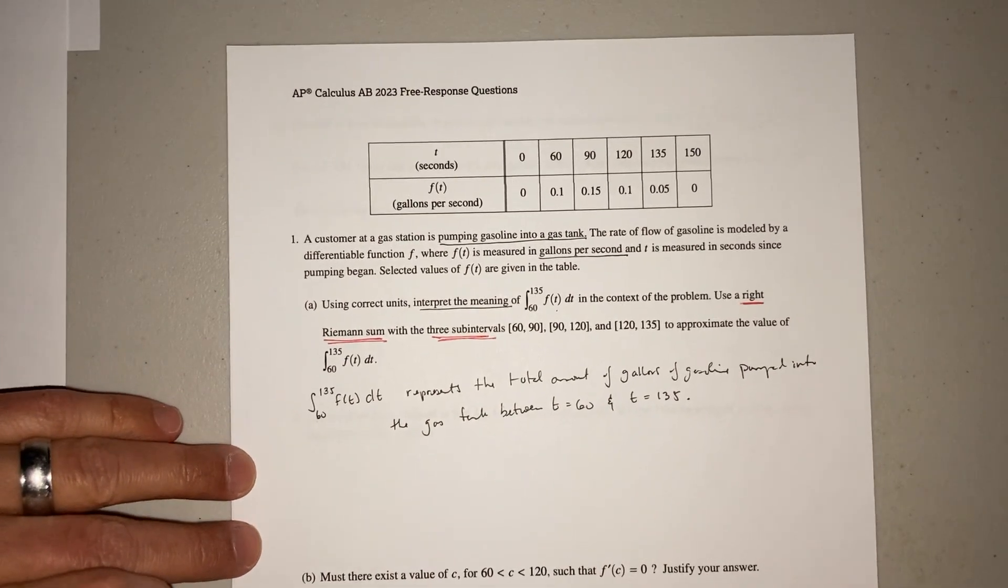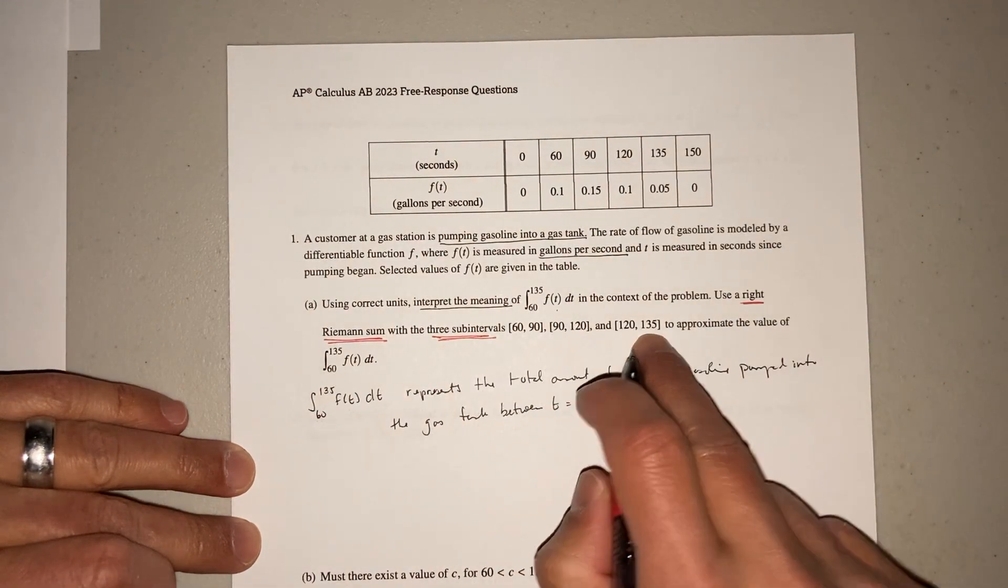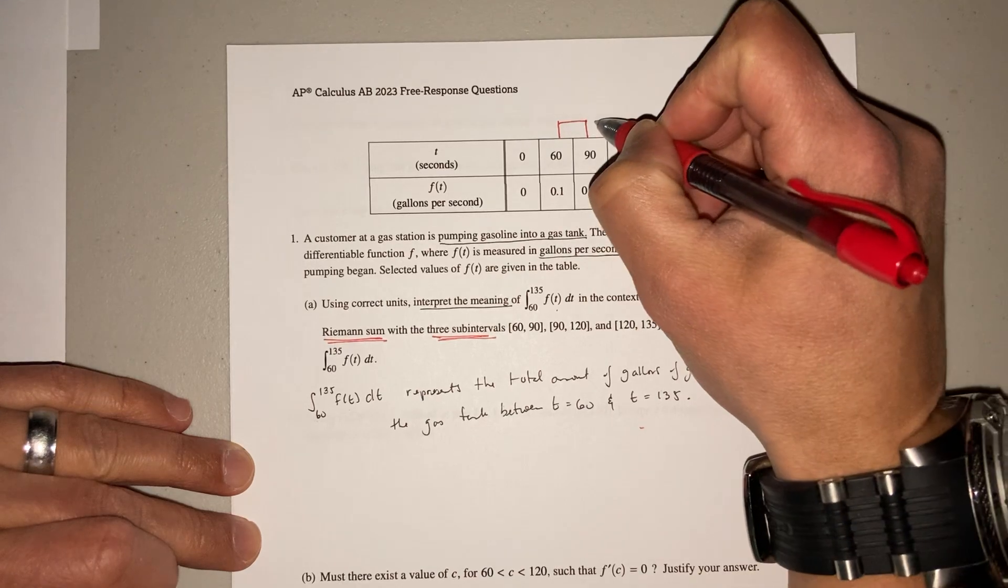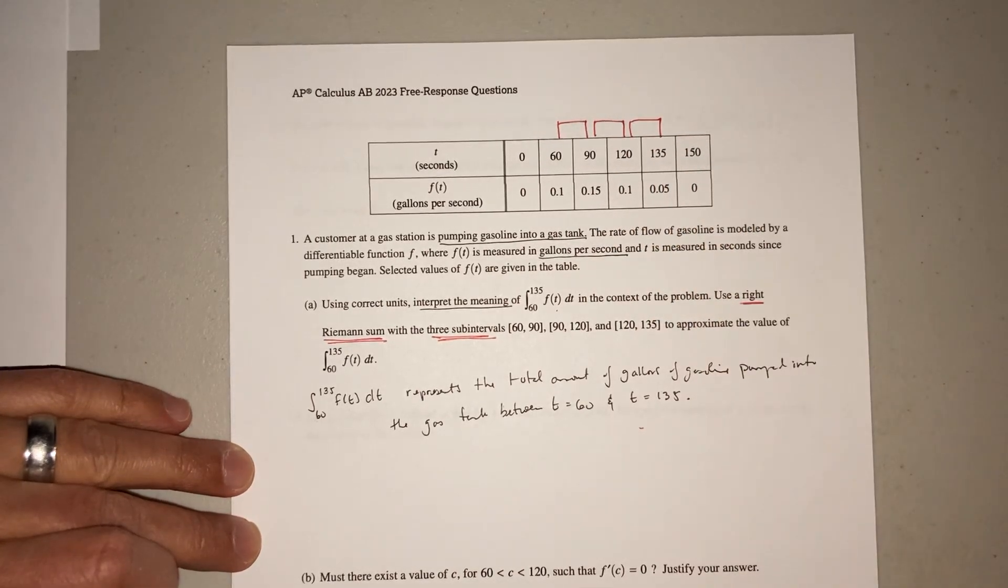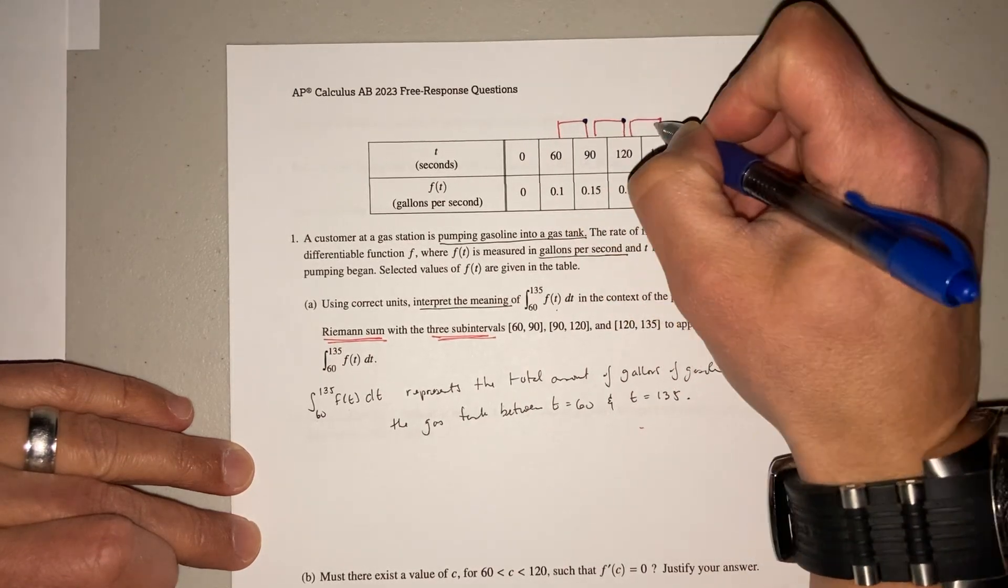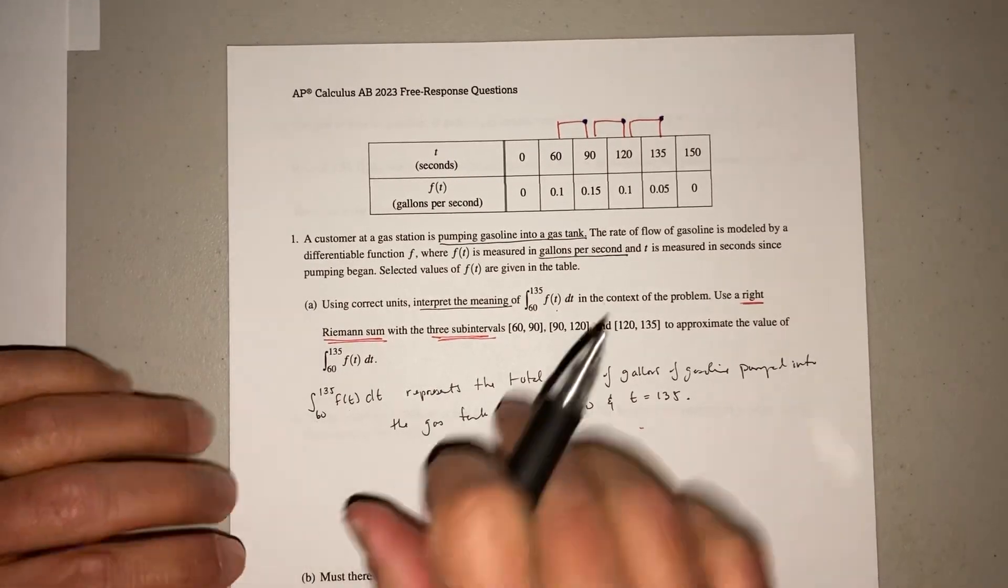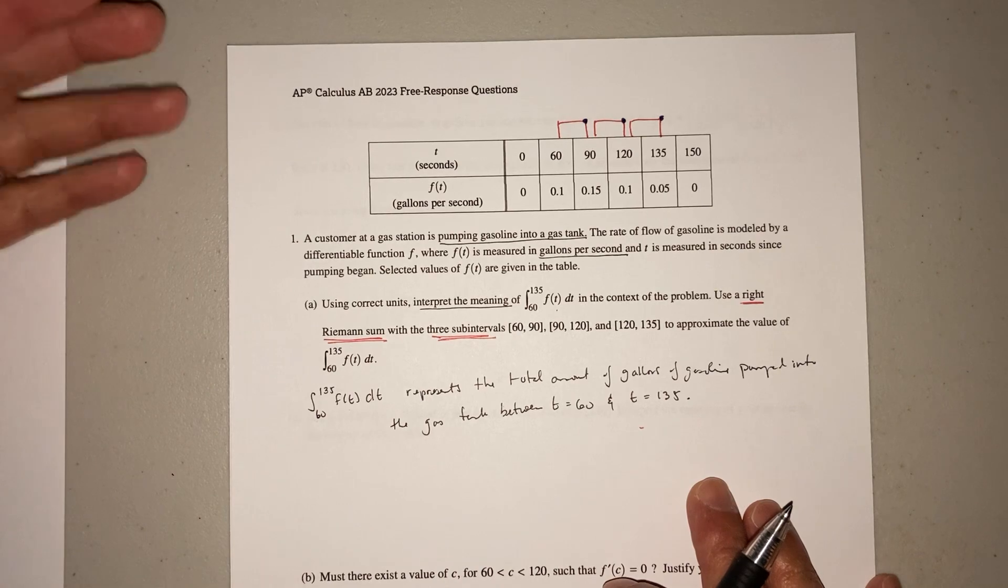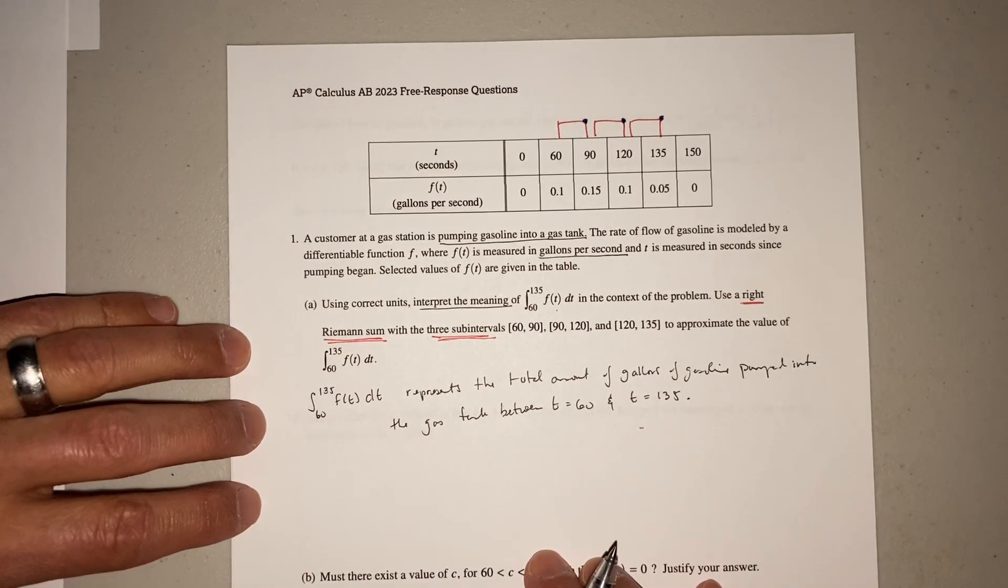So what I tell my students is make a little diagram for yourself. So from 60 to 135, there's your first rectangle, there's your second, there's your third. Because they want a right, let's do this, the right corner. And a lot of times they ask you to interpret if it's overestimated or underestimated. But in this case, they don't.